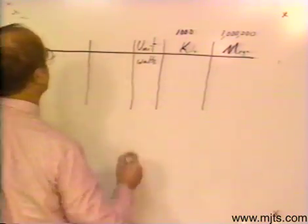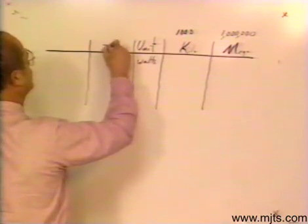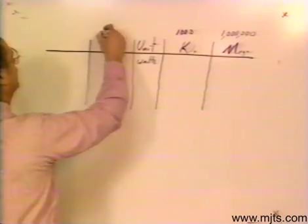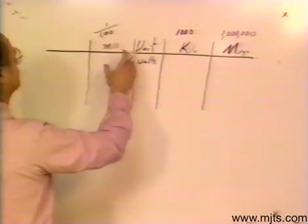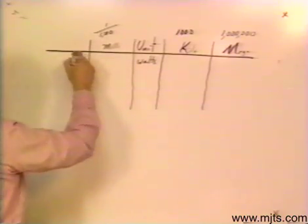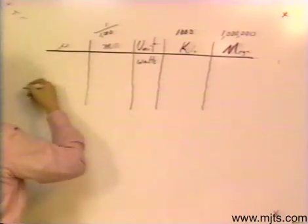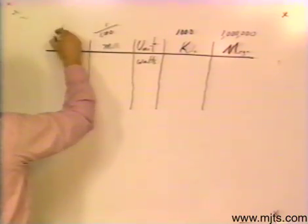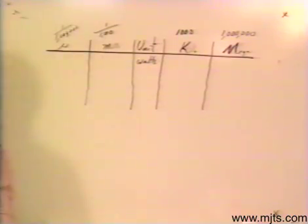Now those are multiples. Over here we'll put the fractions. We'll use a small m which will represent a milli, and that is one thousandth of a unit. We'll go one more for a micro and we're going to represent that with what looks like a backwards y or a u, and that will represent one millionth.